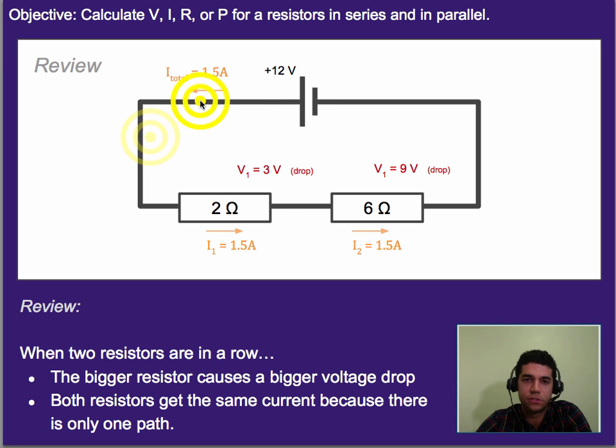We also talked about the idea that since there's only one path through, that means that every single charge that comes out of this battery has to go through this resistor and then this resistor, meaning that the currents through each resistor is going to be the same, because there's no other place for it to go.